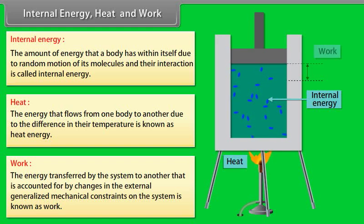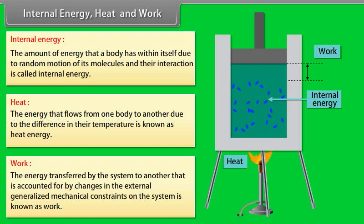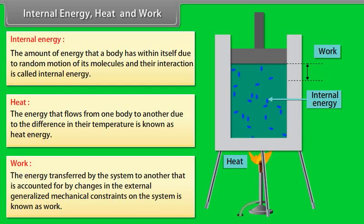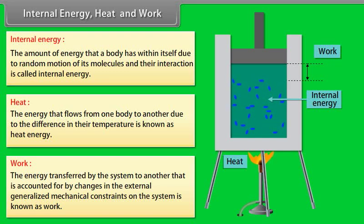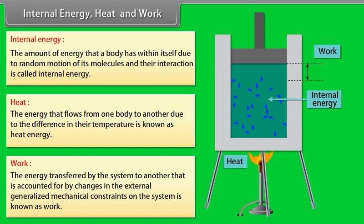Let's take an example. A gas is kept in a container. At the top of the gas, a piston is mounted. The container is heated from the bottom. Gas molecules are in random motion due to their internal energy. Heat energy given to the gas molecules raises the temperature and they expand. When molecules expand, a larger volume is covered. This displacement is the work done.